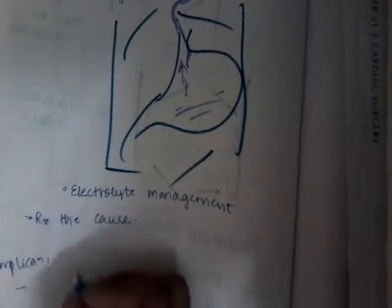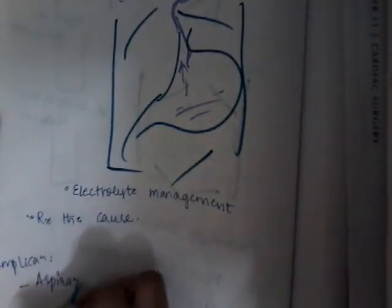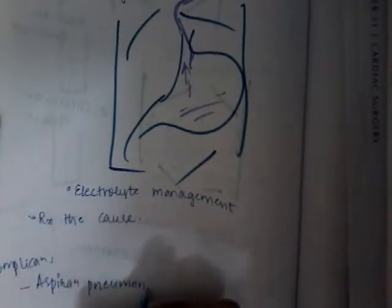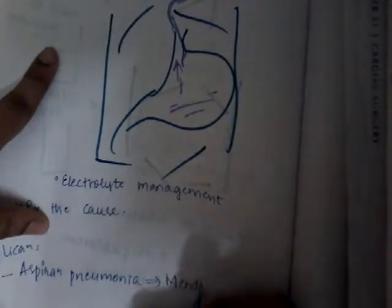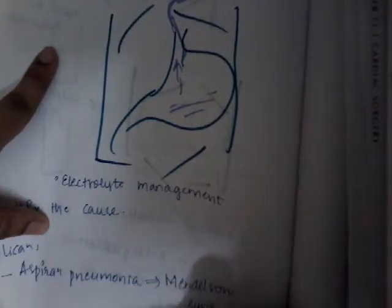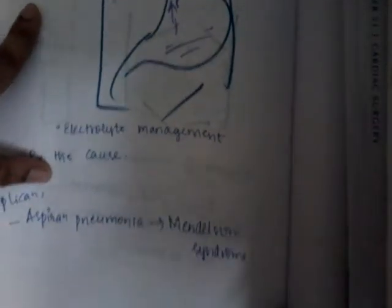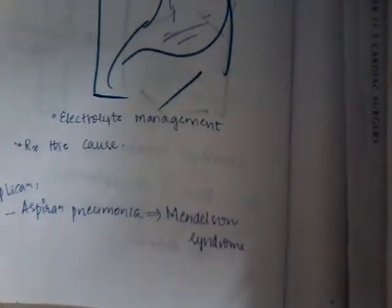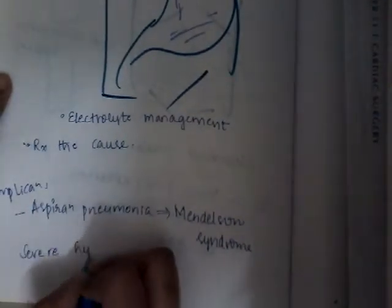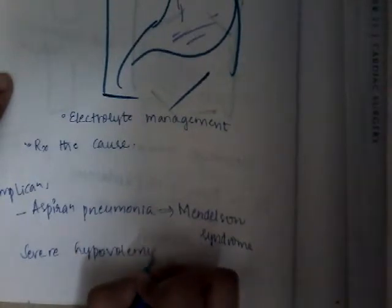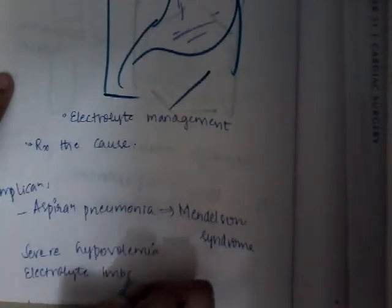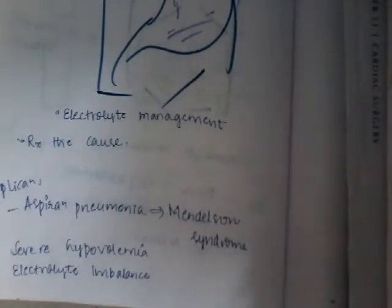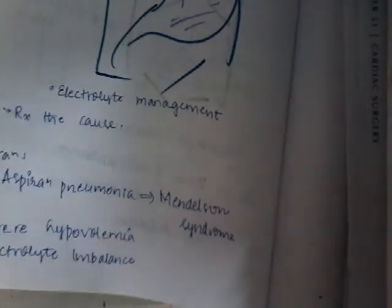The complications of acute gastric dilatation are: aspiration pneumonia, which is also known as Mendelssohn syndrome; severe hypovolemia; and electrolyte imbalance. These are the complications seen in acute gastric dilatation.